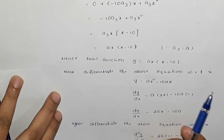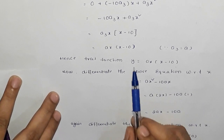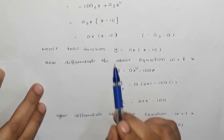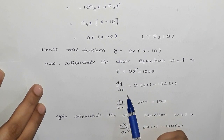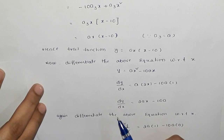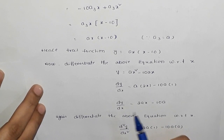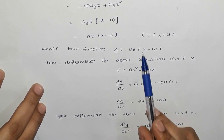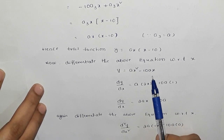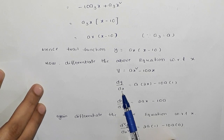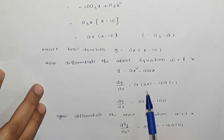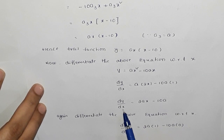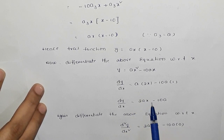To differentiate the trial function with respect to x, we first expand: y = ax² − 10ax. The first derivative is dy/dx = 2ax − 10a. Here, the derivative of ax² is 2ax, and since −10a is a constant, the derivative of −10ax is −10a. So dy/dx = 2ax − 10a.